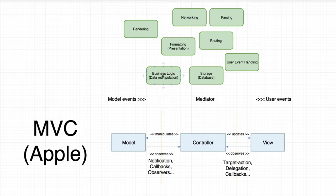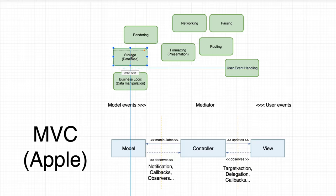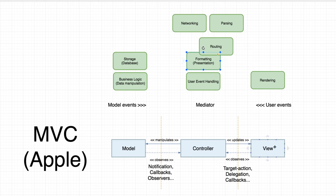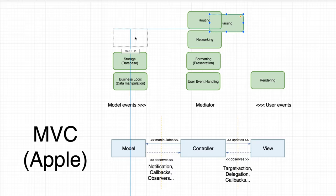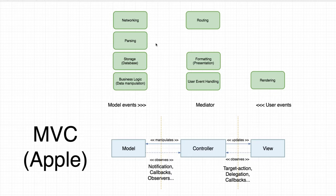Business logic and data manipulation should still live in the model layer, even though some people move it to the controller. Storage and database interactions also tend to go to the model, and event handling lives in the controller. Formatting was moved to the controller, because if the view references the model directly it breaks separation of concerns. Networking sometimes lives in the controller along with routing, while parsing moves to the model. There is no consensus on where this should be, so we end up with undefined placement — and whatever way we arrange those objects, one layer always ends up doing too much.